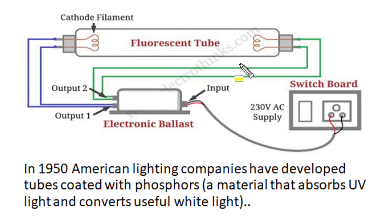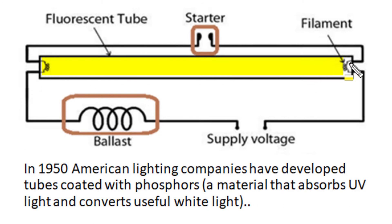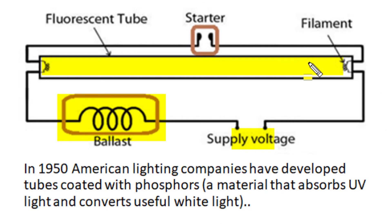All gas discharge lamps and fluorescent lamps are quite efficient, but neither sodium vapor lamps nor high pressure mercury vapor lamps are convenient for indoor applications. For higher efficiency in indoor lighting, American lighting companies in the 1950s developed phosphor coating on low pressure mercury discharge tubes and developed modern tube light. Domestic tube lights come in two sizes: 600 mm long at 20 watts and 1200 mm long at 40 watts. These tubes have two filament electrodes made of nickel alloy with strontium oxide coating.